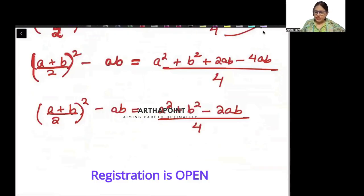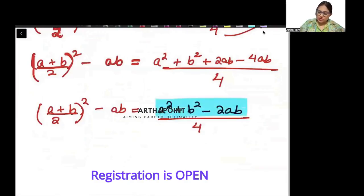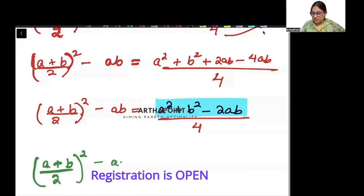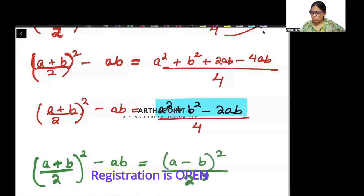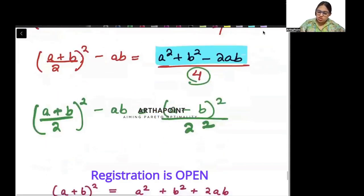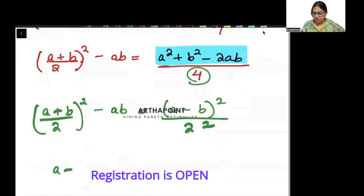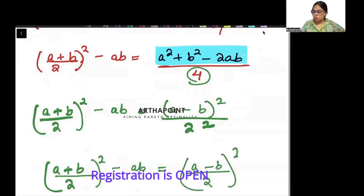So now (a + b)/2 whole square minus ab is equal to a squared plus b squared minus 2ab by 4. If I look at the right hand side, this is the formula of (a - b) whole square. So I get (a + b)/2 whole square minus ab is equal to (a - b)/2 whole square.